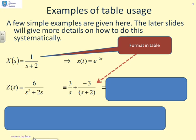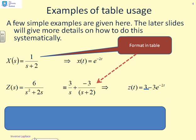What about the next example? If you have 6 over s squared plus 2s, you'll notice that this form does not appear in the table. So the first thing to do is rearrange that into two forms which do occur in the table. So here they are, 3 over s and minus 3 over s plus 2. Once you've got it into that form, we can look in the table, and you end up with z(t) equals 3 minus 3e to the minus 2t.